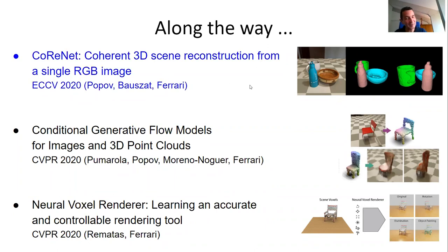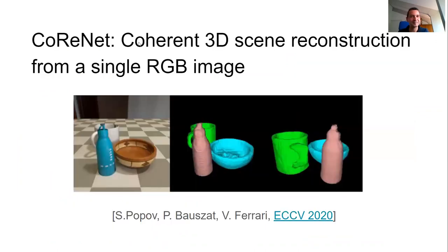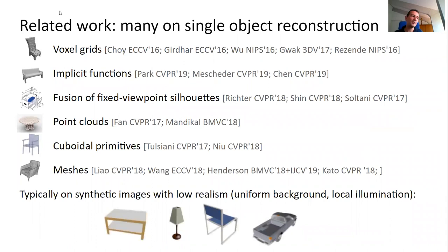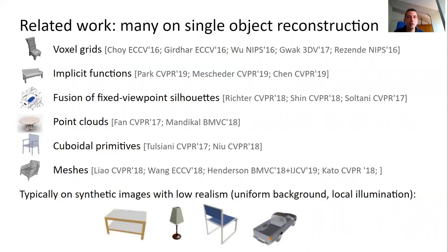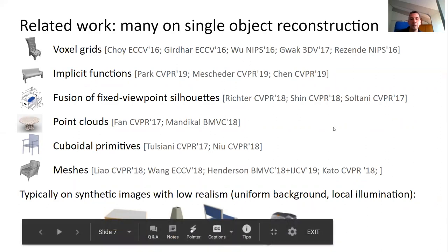The first work is not yet published and will come out at CVPR in a couple of months. There has been a big surge in the last five to seven years of neural networks for single object reconstruction — they typically take a single image and output a voxel, mesh, or point cloud reconstruction. These works focus on the volume representation, using voxels, meshes, point clouds, cuboidal primitives, or implicit representations like occupancy networks. Typically they work on synthetic images with low realism — uniform backgrounds and only local illumination models.